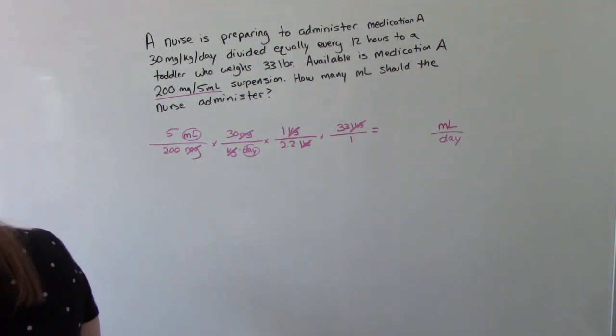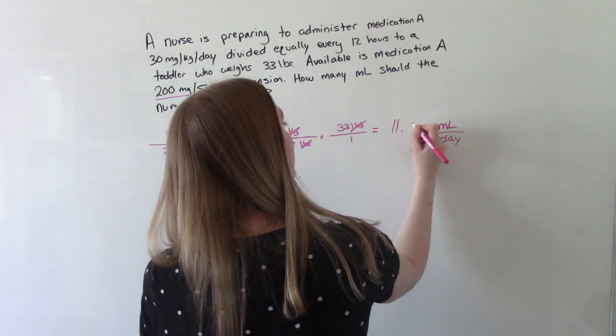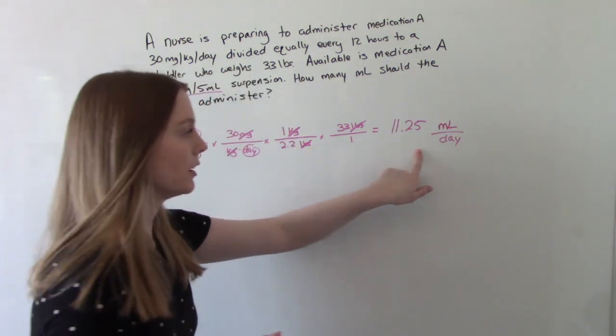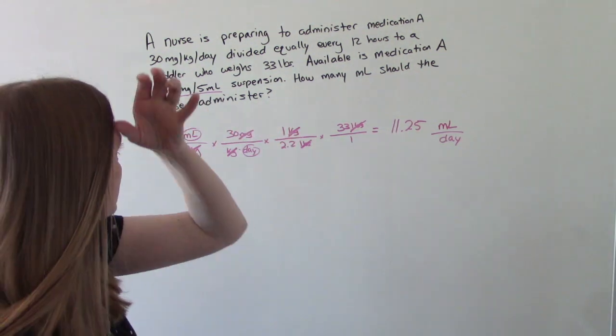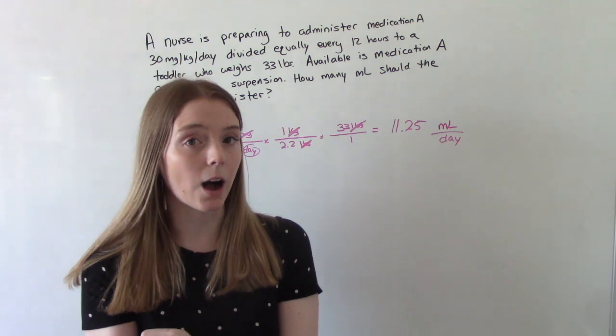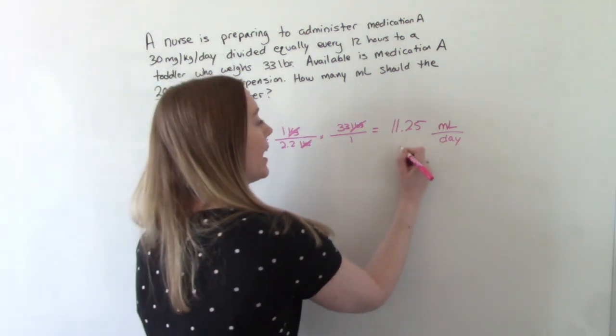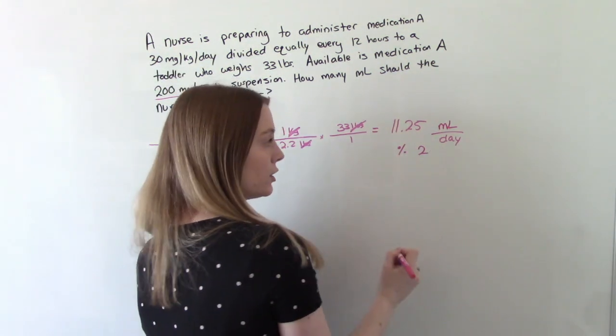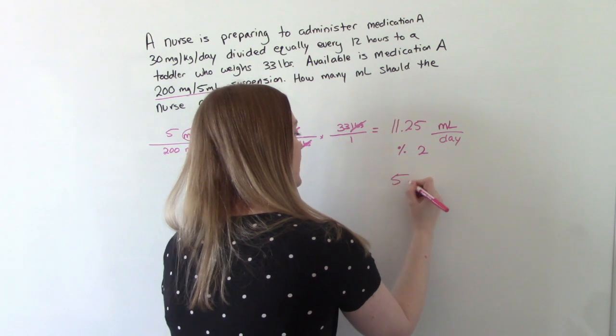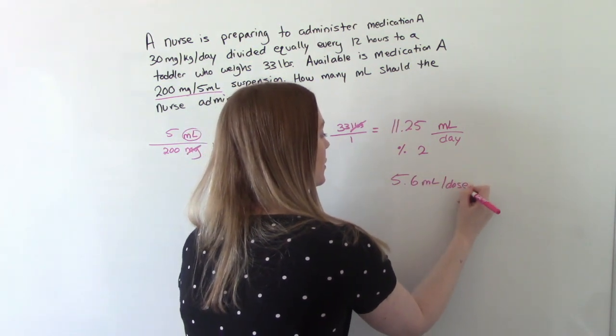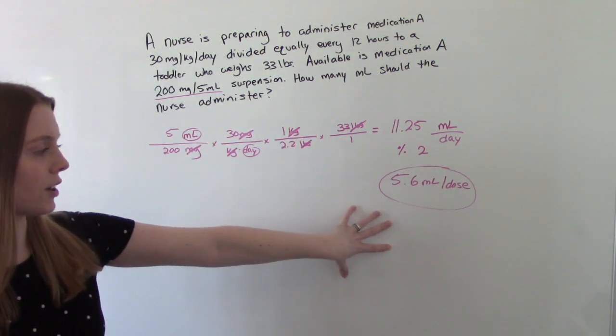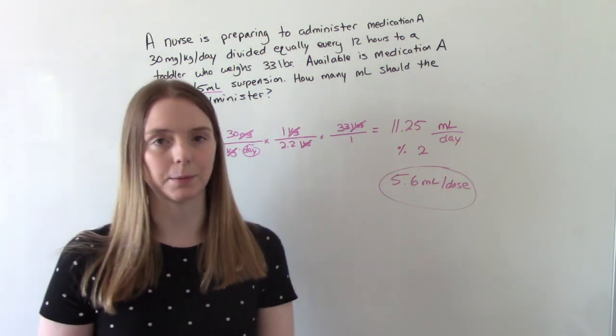So punch it into your calculator, and you get 11.25 ml's per day. But we're not done, because we want to know how many ml's per dose. This is every 12 hours. So we're going to divide this by 2, and it's going to be 5.6 ml's per dose.